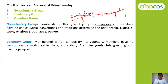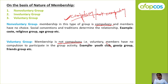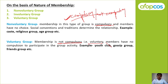In a voluntary group, the nature of membership is not compulsory. If you don't want to be a part of that group, it completely depends on your choice. Membership is voluntary — members have no compulsion to participate in group activity. Even if there is a group activity, it is not compulsory for you to participate. For example: youth club, gossip group, friends group — if there is a gossip group and you don't want to join, it is completely your choice.